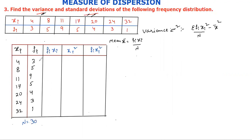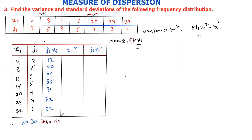Now we multiply fi and xi: 4×3=12, 8×5=40, 11×9=99, 17×5=85, 20×4=80, 24×3=72, and 32×1=32. The total Σfi·xi = 420. So the mean x̄ = 420 / 30 = 14.